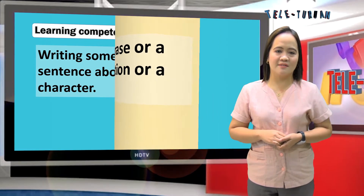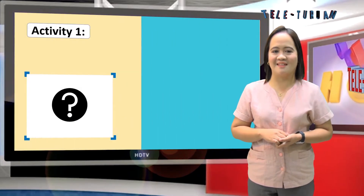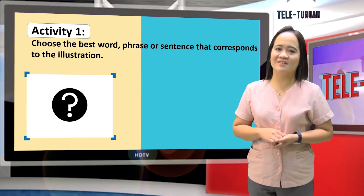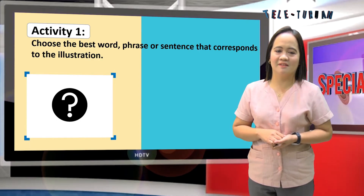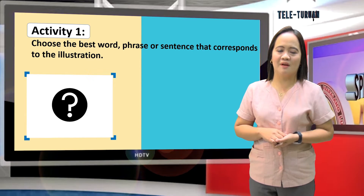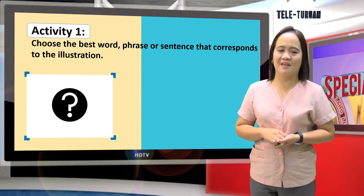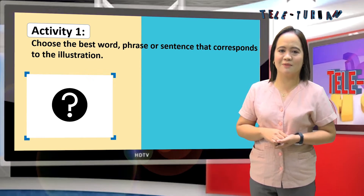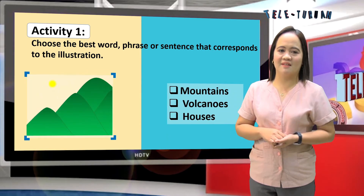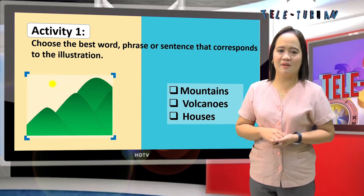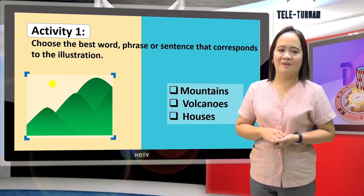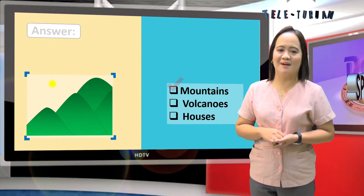Let's start our lesson with this activity. Let's try the first illustration. Choose the best word, phrase, or sentence that corresponds to the illustration. First illustration: mountains, volcanoes, houses. Correct — mountains.